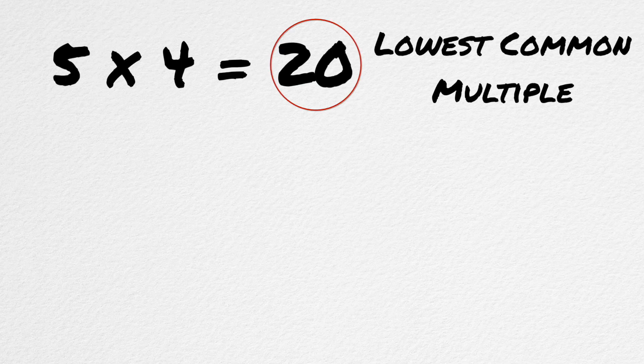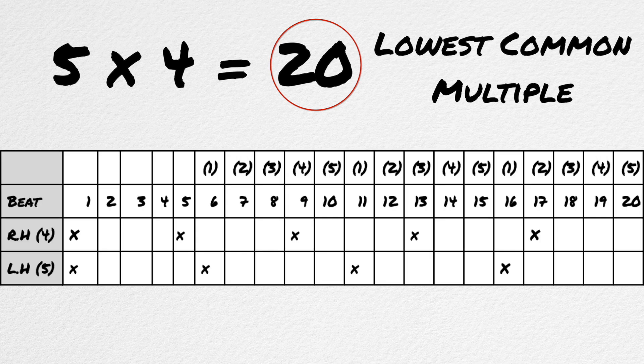The other chart that we can use involves the lowest common multiple. We take the two numbers and multiply them together to find the lowest common multiple between them. For five against four, this would be 20. We then write out one through 20 in two different rows. One gets an X every four beats, and the other gets an X every five beats. Assign your left hand to one row and your right hand to the other, and then count through in a similar way.